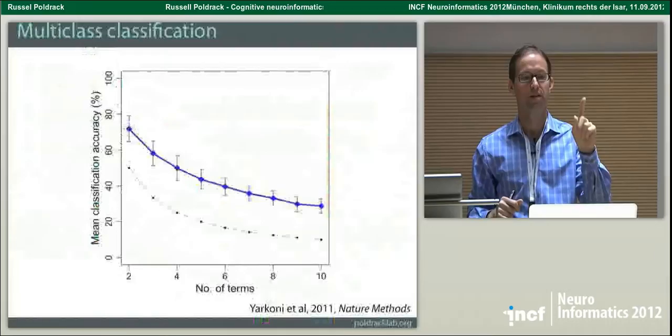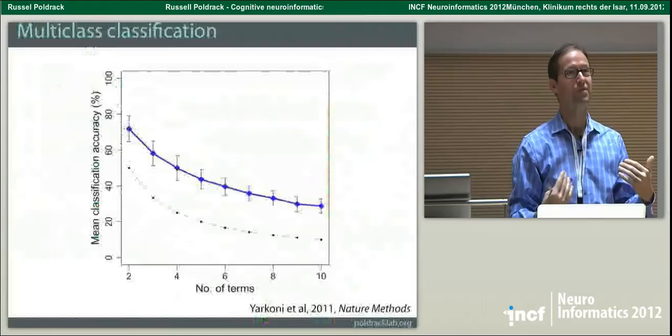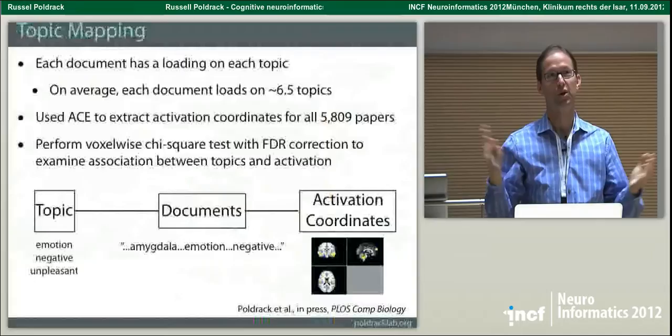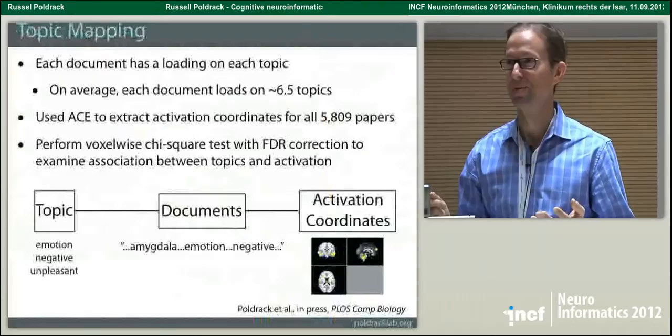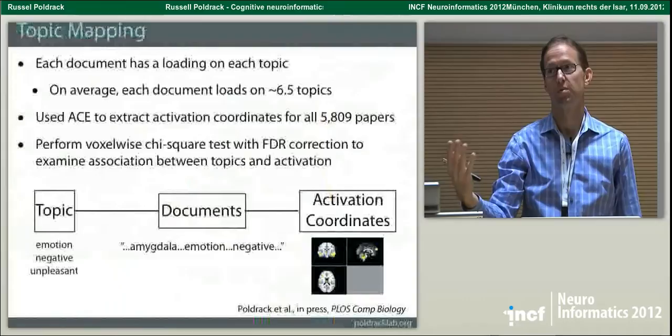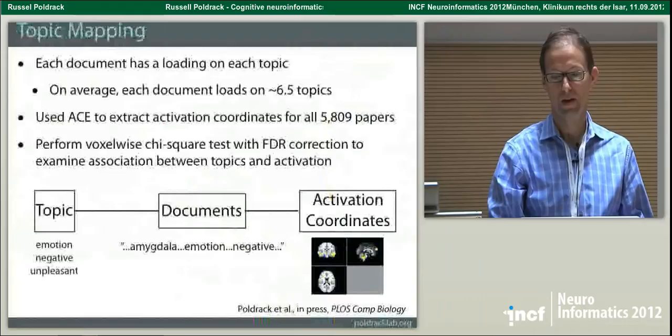We started out doing it on full text. We left out a few things: standard English stop words, author names — because if you don't leave out author names most of the topics end up having a couple of people's names in them — and we also left out brain structures, because we didn't want the topic modeling to be driven by brain structures. We really wanted to be sensitive to the conceptual stuff around cognitive processes.